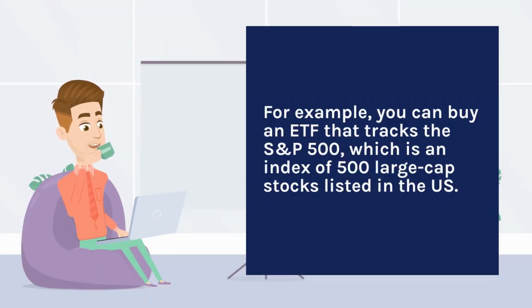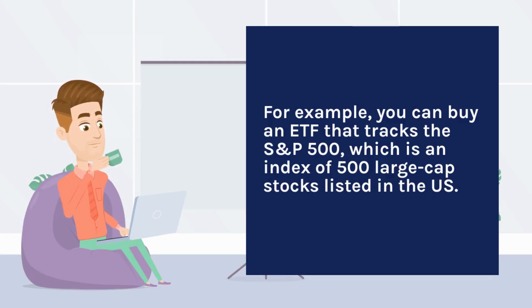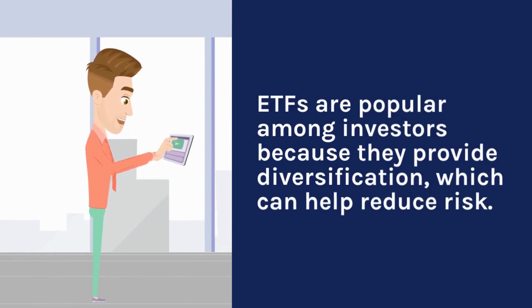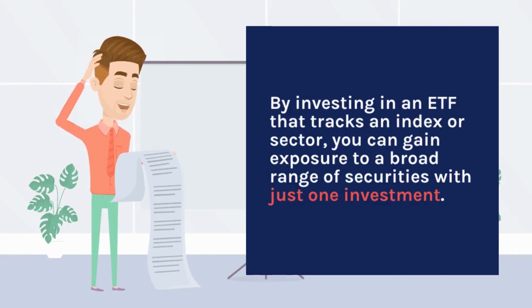For example, you can buy an ETF that tracks the S&P 500, which is an index of 500 large-cap stocks listed in the US. ETFs are popular among investors because they provide diversification, which can help reduce risk. By investing in an ETF that tracks an index or sector, you can gain exposure to a broad range of securities with just one investment.